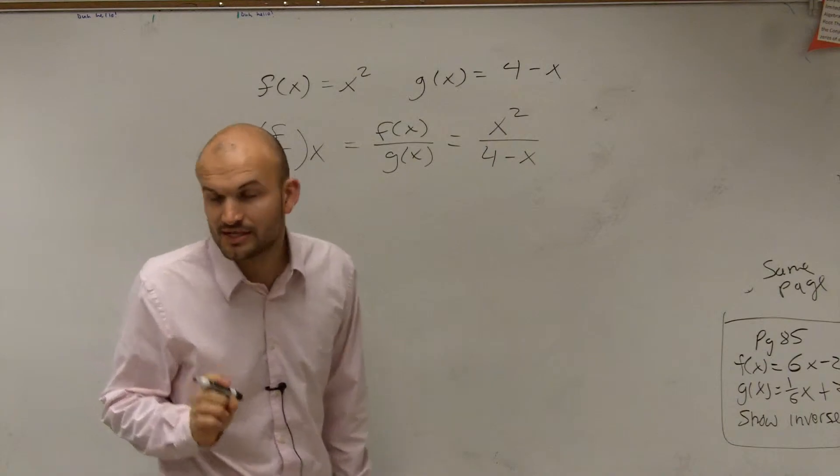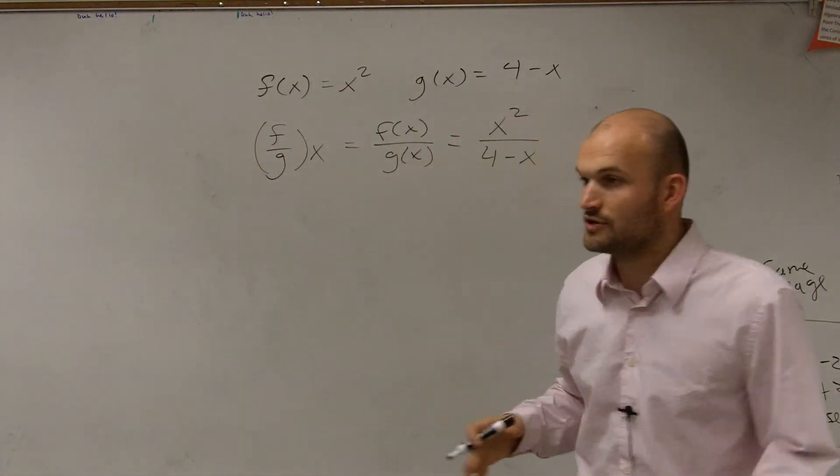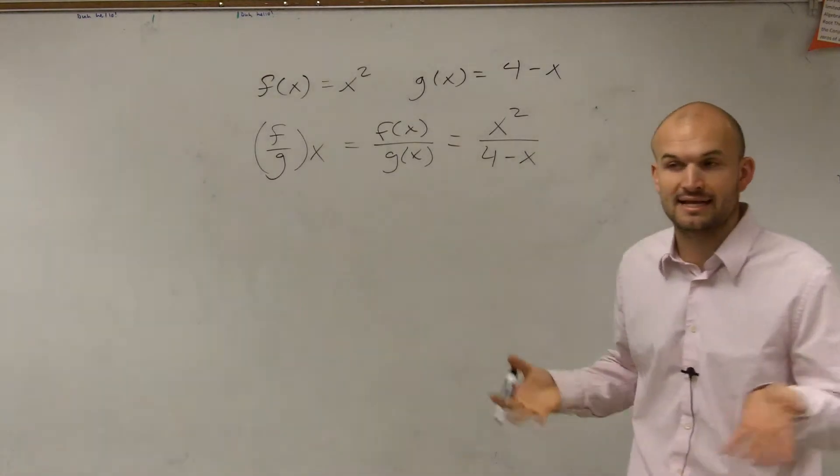But the main important thing we need to understand is when we have our rational function, we need to make sure we include our constraints of what x can and cannot be.